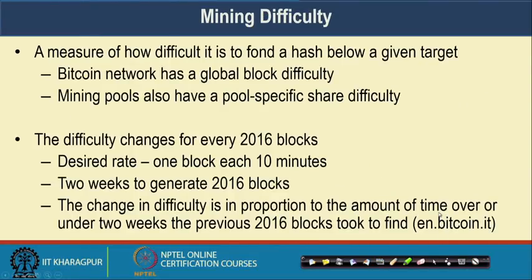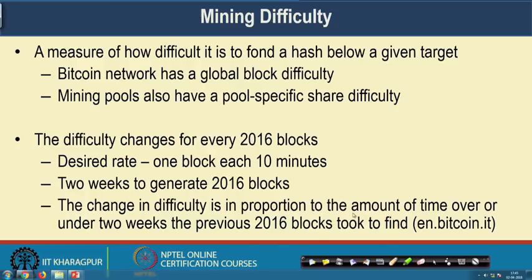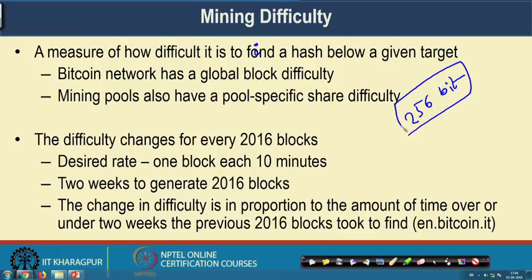We have a term called mining difficulty. Mining difficulty is a measure of how difficult it is to find a hash below a given target. The mining procedure generates a 256-bit hash function, and the difficulty is represented by saying that, for example, out of this 256-bit hash the first 64 bits should be zero. So at least the first 64 bits would be zero, and after that the remaining bits can be zeros and ones.